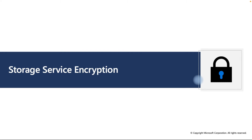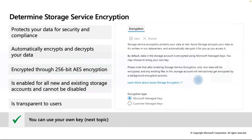Today we'll take the topic of Storage Service Encryption, which is part of AZ-104. We won't go into very much detail - we will discuss only a small part of encryption. Storage service encryption is used to protect your data for security and compliance. It automatically encrypts your data before it is persisted to Azure Managed Disk, Azure Blob Storage, Azure Queue Storage, Azure Cosmos DB, Azure Table Storage, or Azure Files. Encryption is done through 256-bit AES encryption.